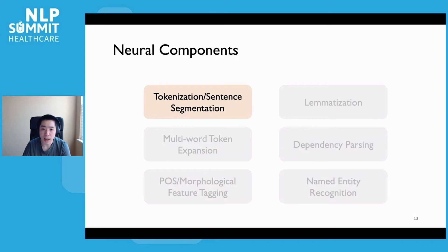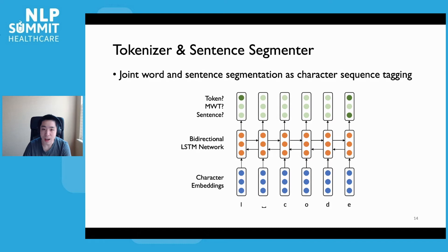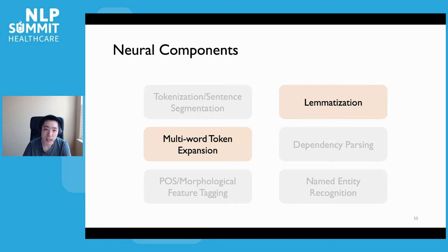Let's first take a look at the tokenization and sentence segmentation module. Unlike most existing NLP toolkits, which use rules for tokenization, Stanza models tokenization and sentence segmentation jointly as a character sequence tagging problem, realized by a lightweight neural network. This network first encodes the input character sequence with a bidirectional LSTM, and then predicts whether a token or sentence needs to be split at the current location. This design makes the module completely data-driven and end-to-end trainable.